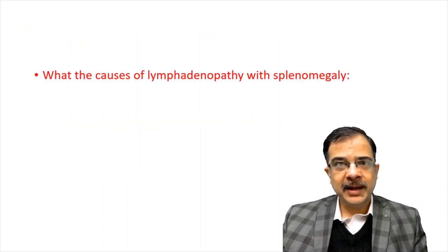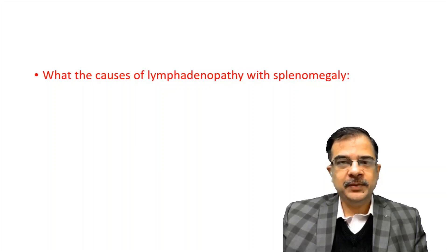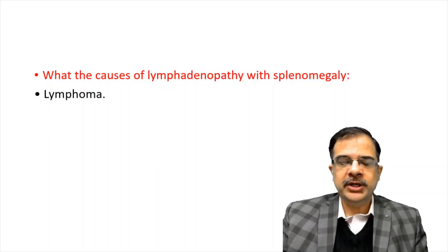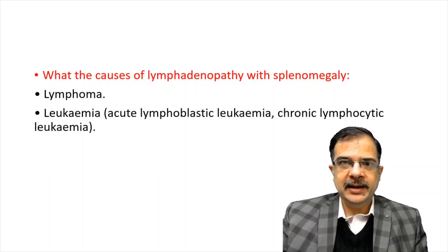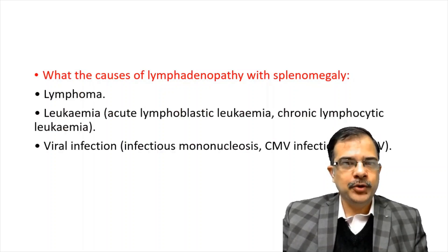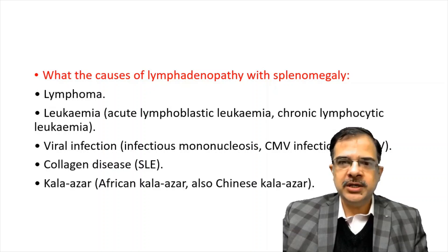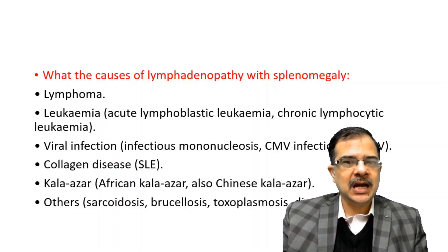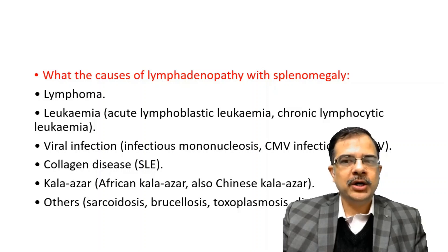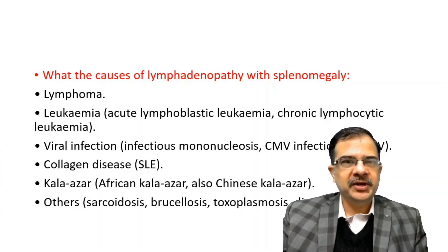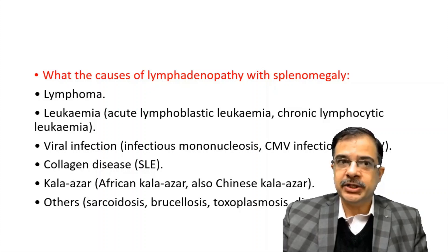For lymph nodes palpable along with splenomegaly, what could be the cause? It could be lymphoma, leukemia, viral infections, collagen disorders, kala-azar and brucellosis, sarcoidosis, or disseminated tuberculosis. Lymphadenopathy will be present in all these conditions.